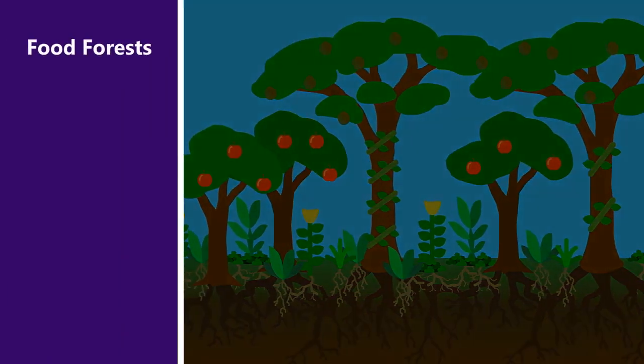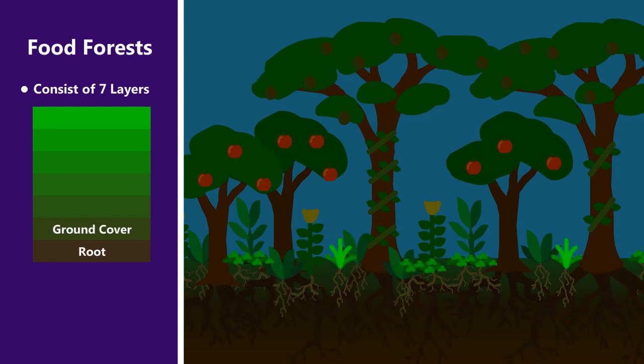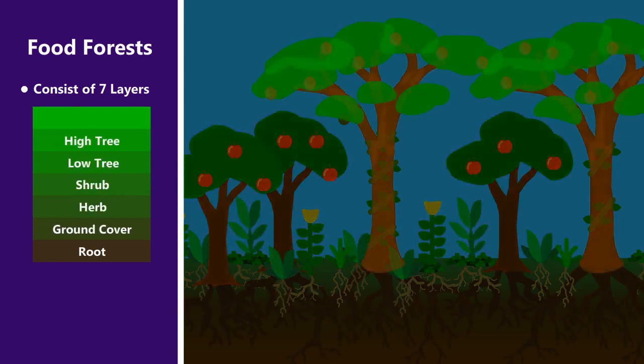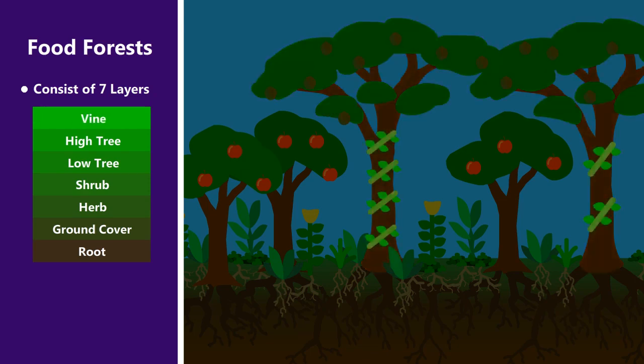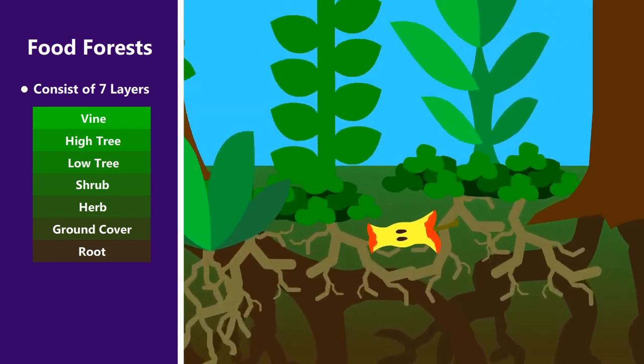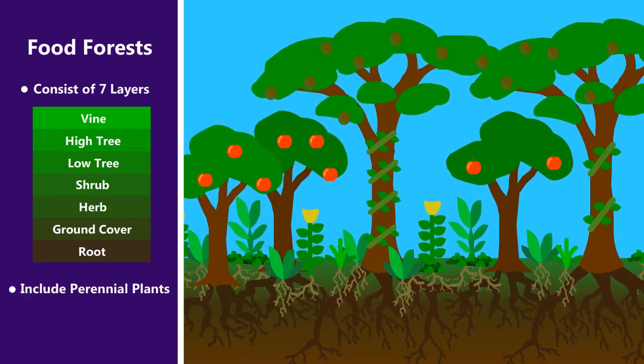Food forests are often thought of as comprising seven layers. The root layer, the ground cover layer, the herb layer, the shrub layer, the low tree layer, the high tree layer, and the vine layer. Every one of these layers either produces some sort of food or medicine or is in some way helpful to the system as a whole. The plants are mostly perennials and include as many native species as possible.